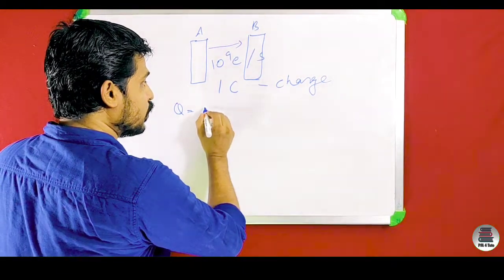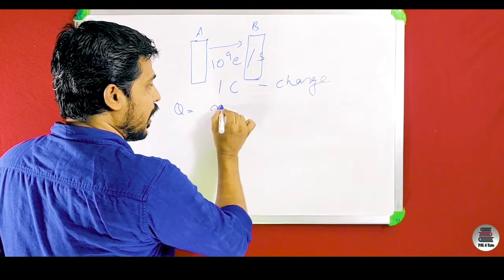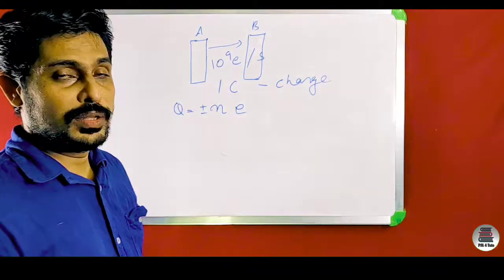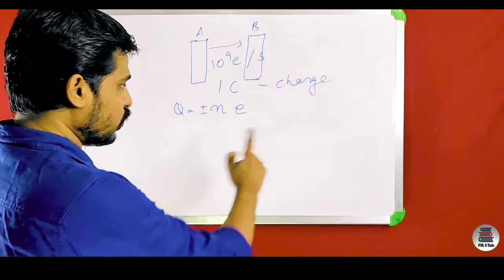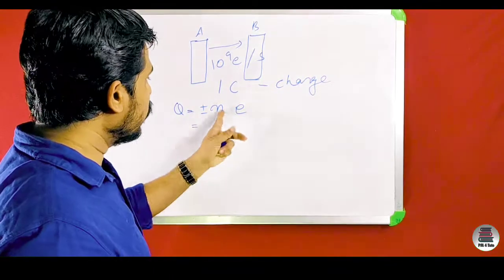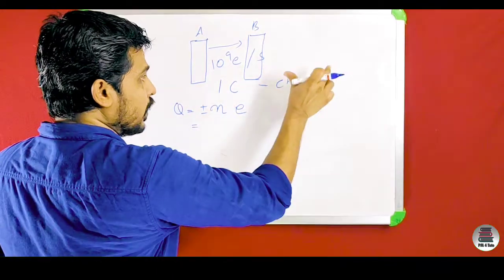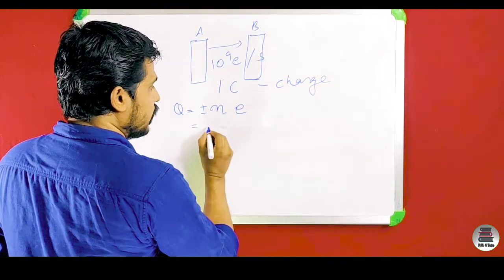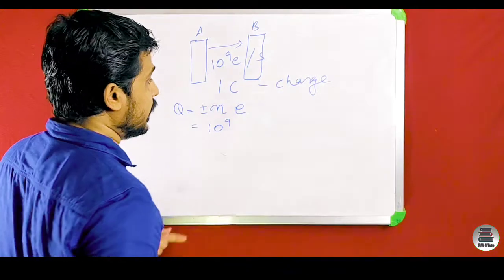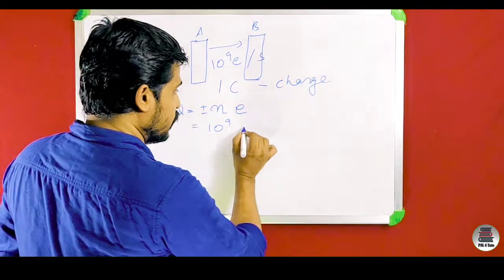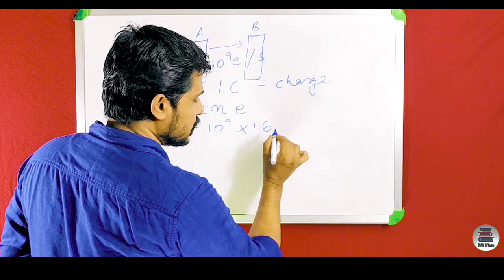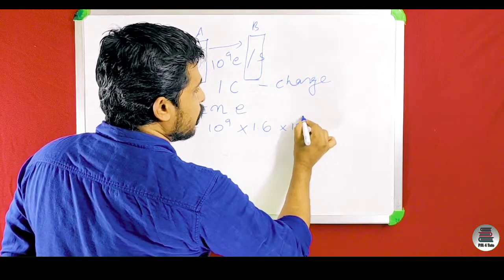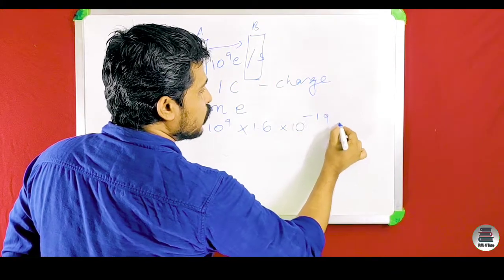As we learned, our formula is Q = ±ne. Here, n is the number of electrons per second. In one second, let's say 10 raised to 9 electrons pass.